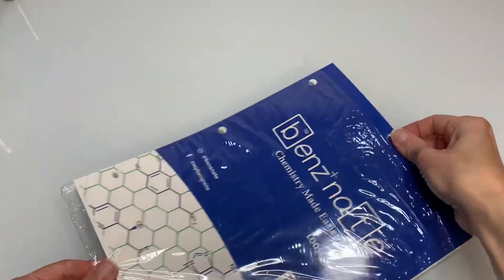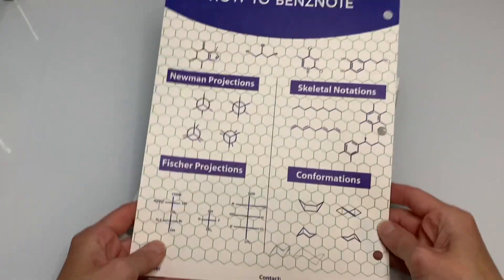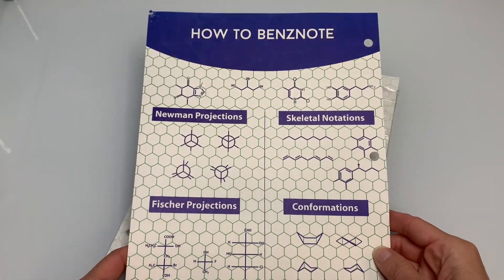First I'm gonna show you the Ben's note paper and hey check it out it comes with this cool guide that shows you how to draw Newman and Fisher projections. I thought that was pretty neat.